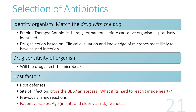In determining which antibiotics to use, one key step is identifying the organism — matching the drug with the bug. In general walk-in clinics, empiric therapy is often used, meaning the antibiotic is prescribed before or even without the pathogen being identified, based on local data and clinical knowledge of which microbes most likely caused the infection. The second step is identifying the drug that can control the infection.